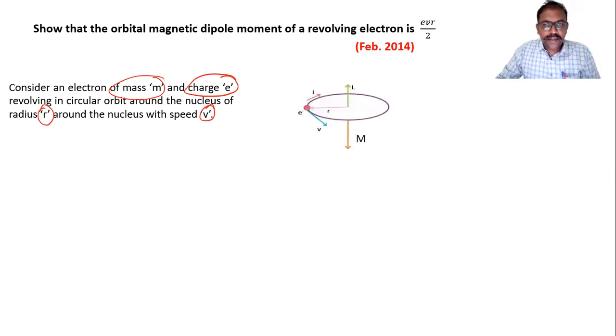So you can see this diagram. Then this revolving electron, this is an angular momentum of the revolving electron. This is an actual electron. This is a radius. This is speed of the electron.